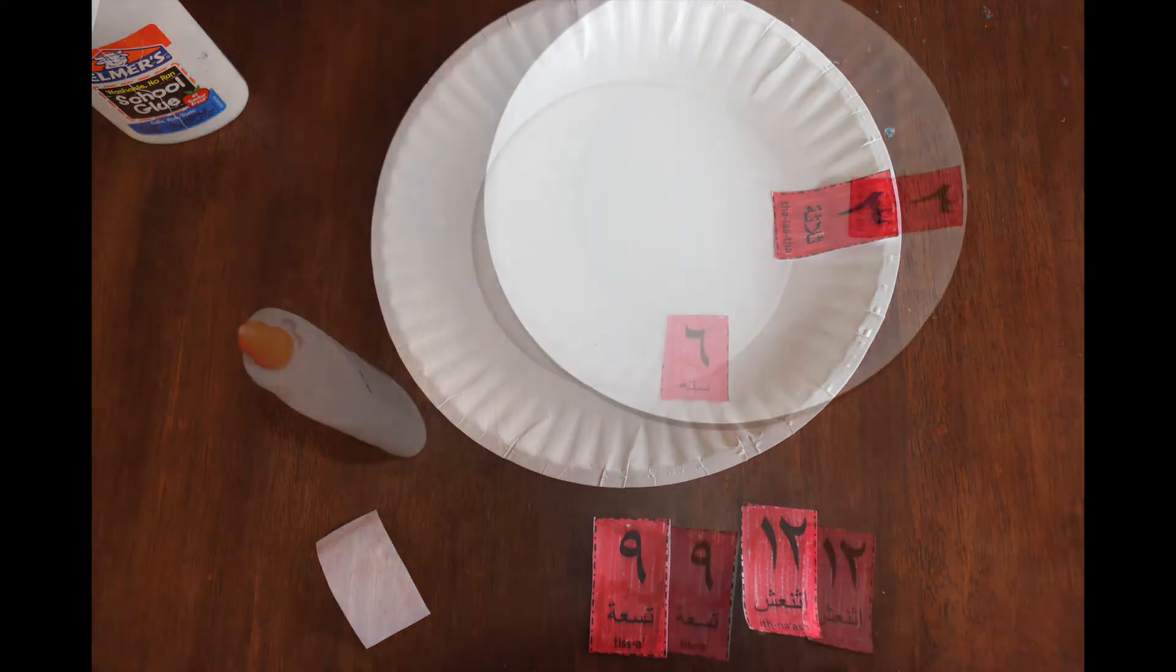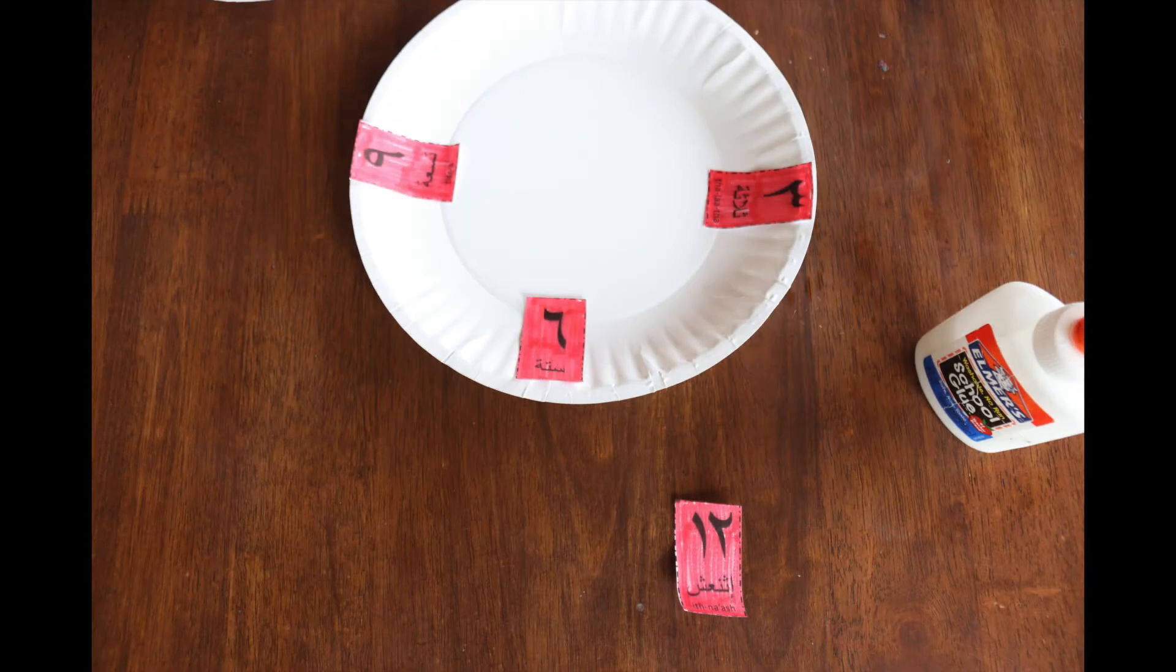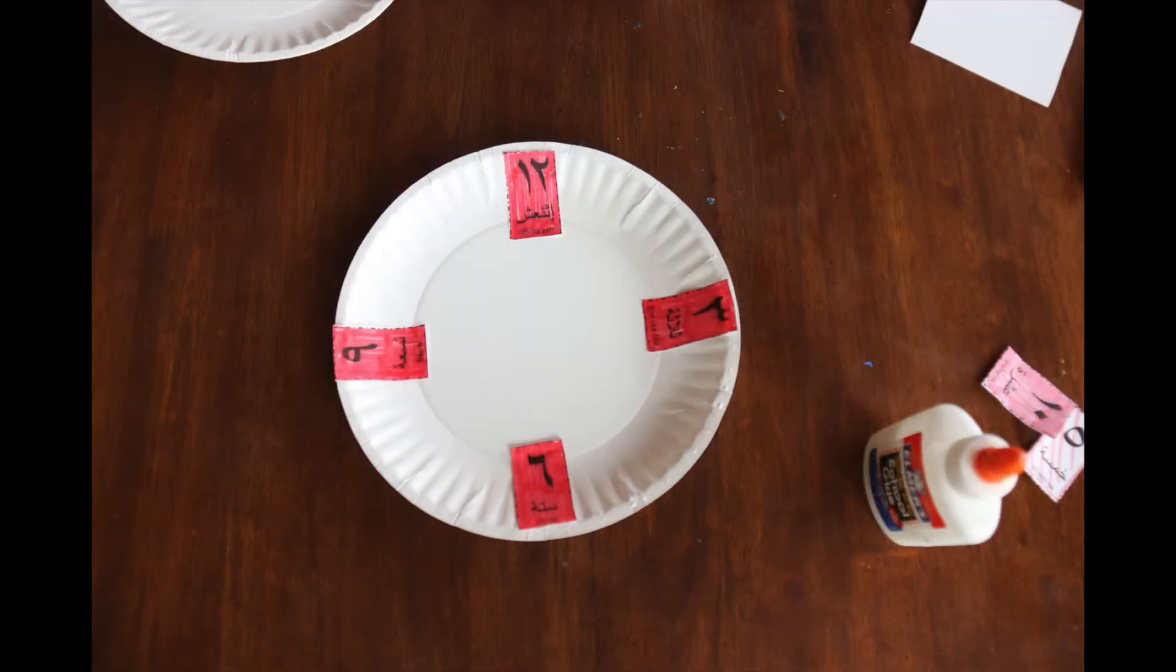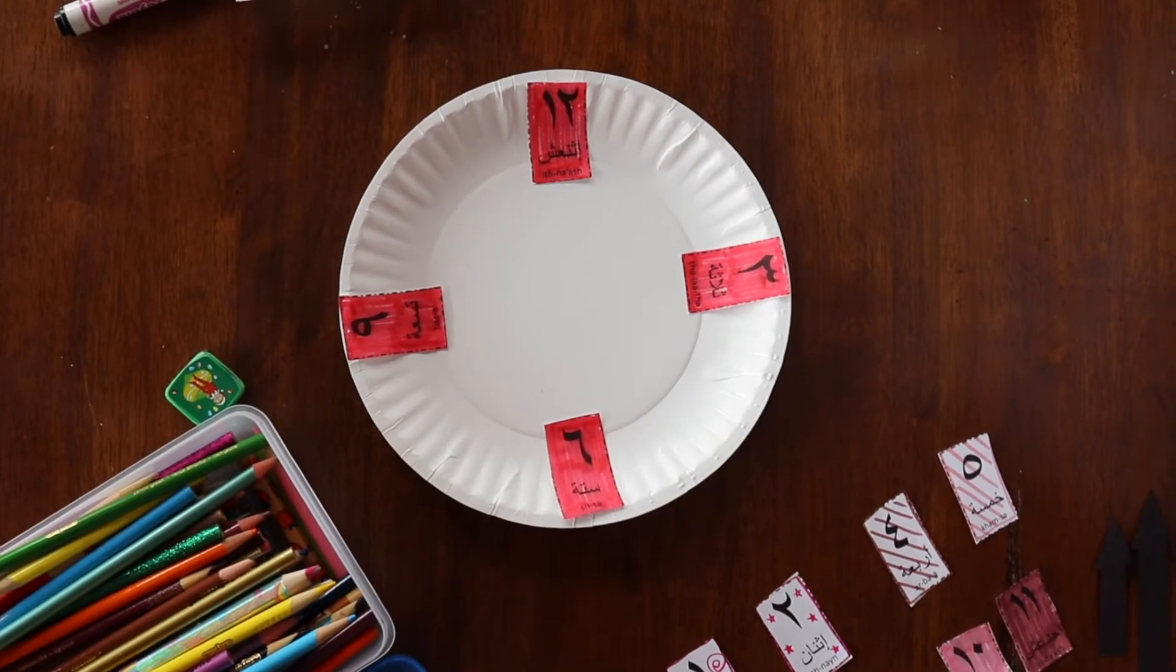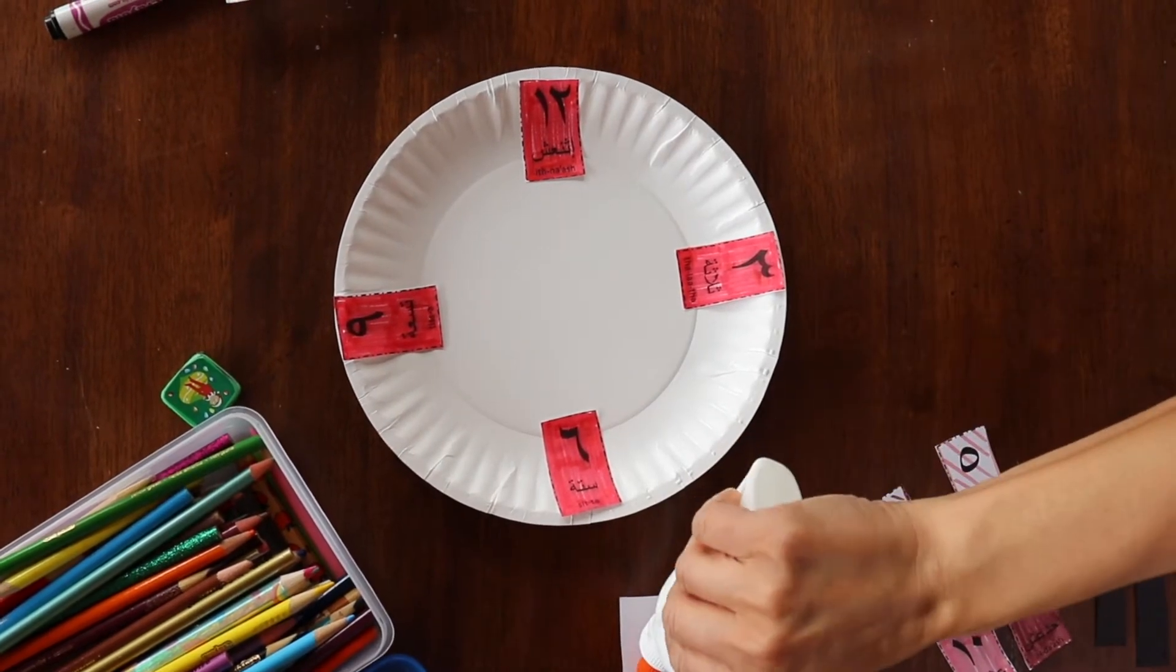Starting with Thalatha, Sitte, Tissa, and Ethnash. So you have your 12 o'clock, 3 o'clock, 6 o'clock, 9 o'clock. And then you can go to town putting in those other pieces. It makes it a lot easier to get them in place.